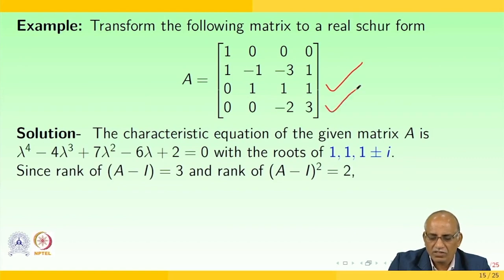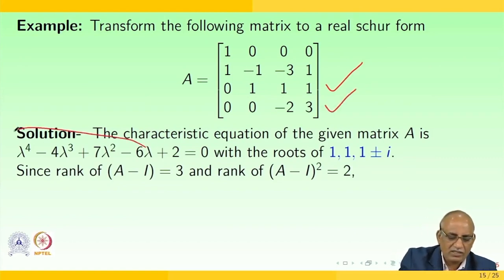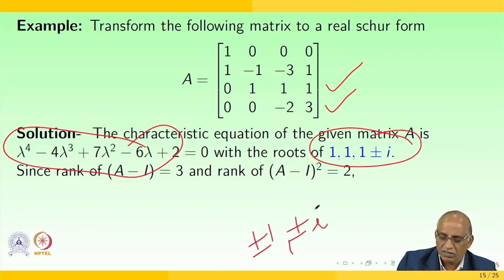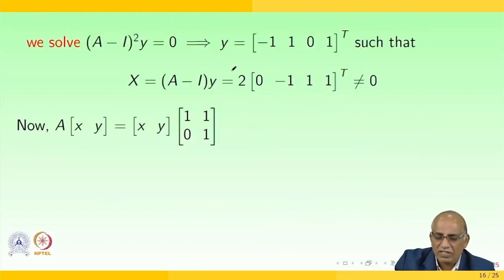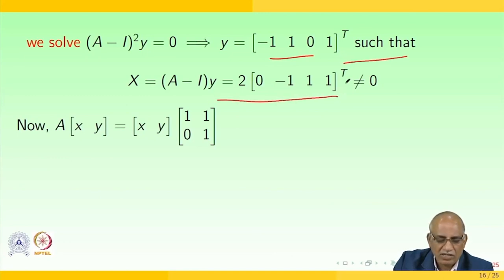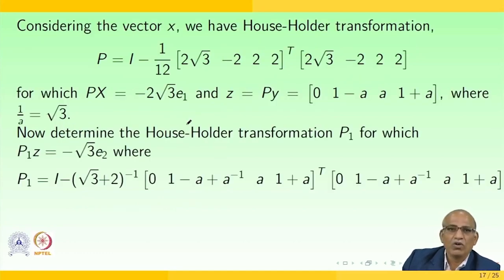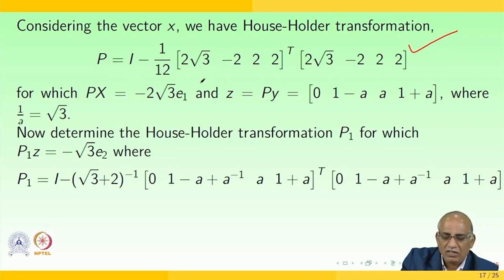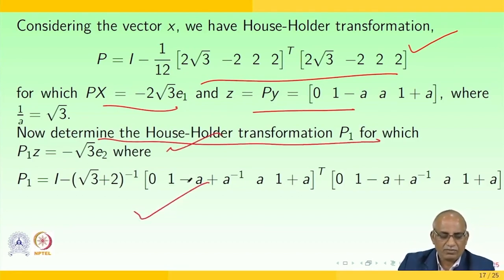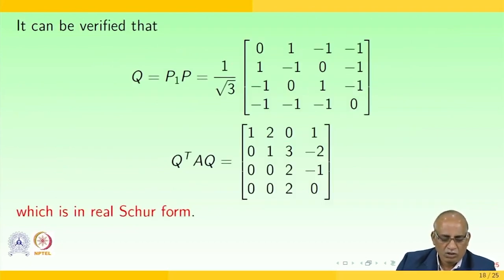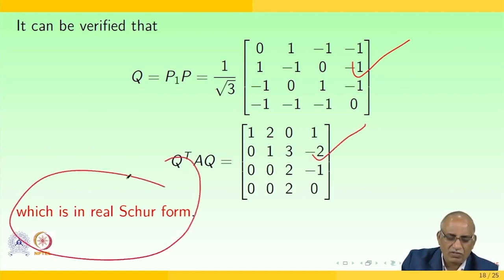A matrix is defective if some of its eigenvalues are defective. Consider the matrix [0, 1, 1; 1, 0, 0; -2, 3, ...]. The characteristic equation gives eigenvalues ±1 and ±i. The rank of A is 3, the rank of (A − I) is 3, and the rank of (A − I)² is 2. Solving (A − iI)²y = 0 gives y = [-1, 0, 1] such that the value is non-zero. Using the Householder transformation, with P = I − (1/12)·(matrix), we get householder transformations P1 and P2. It can be verified that Q = P1·P2 and QᵀAQ gives the real Schur form.